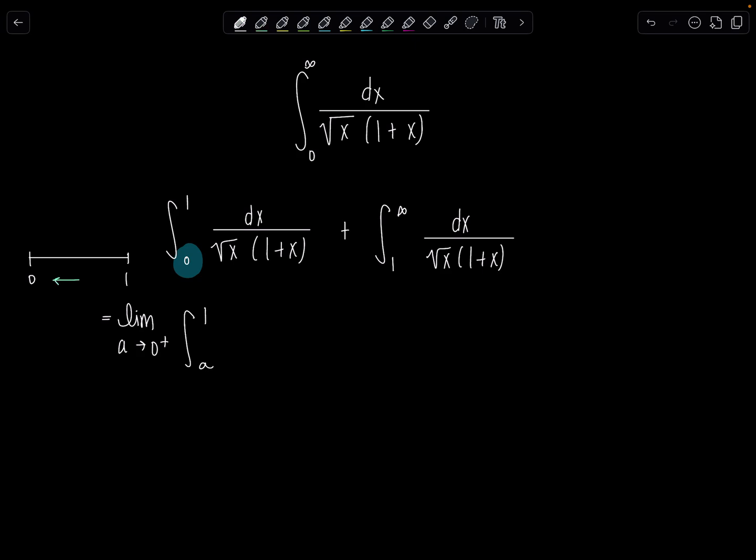And then we have here dx over square root of x. Why is that so crooked? My apologies. This is actually the second time I'm recording this. I recorded it all the way through and it wasn't recording. So plus then the other issue is infinity. So I'm going to write it as the limit as T approaches infinity integral one to T dx over square root of x times one plus x.